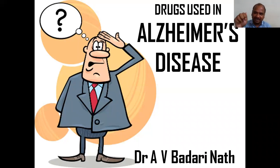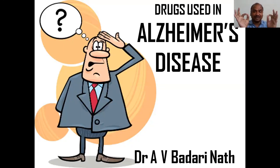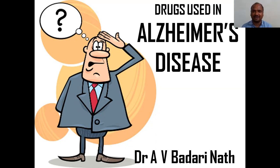If you are forgetting your bike key, that is normal — that happens in common life. But if you are forgetting your husband or forgetting your wife, you don't just suspect Alzheimer's — it is confirmed. Alzheimer's disease is confirmed.